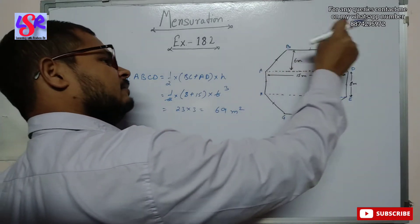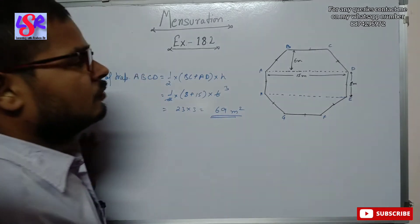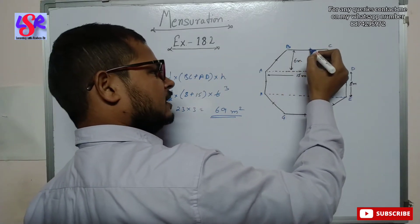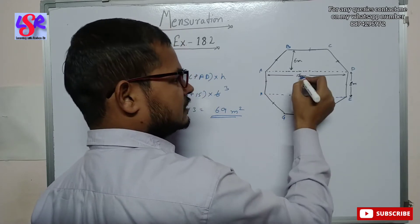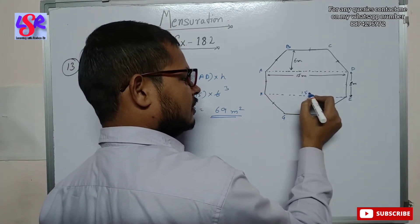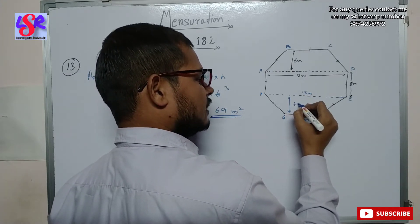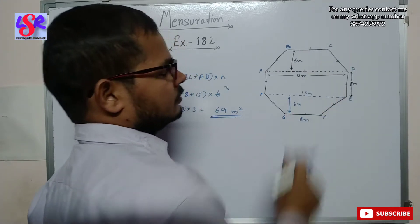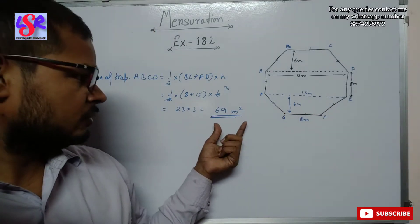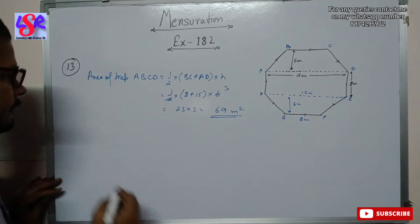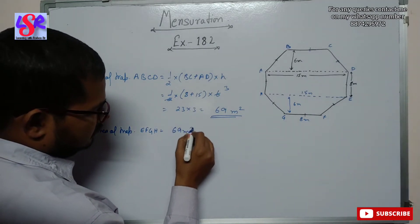We have got the area of trapezium ABCD as 69 square meters. Now since this side is 8 meters and the other is also 8 meters, and this is 15 meters so that is also 15 meters, and the height is also 6 meters, the dimensions of both trapezoids are the same. Therefore the area of trapezium EFGH is also 69 square meters.